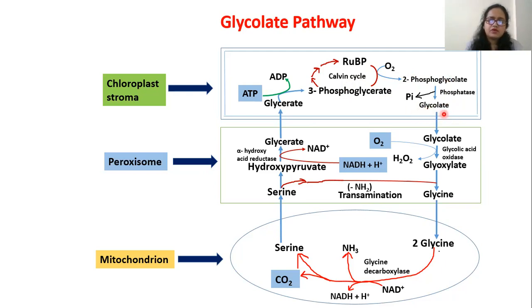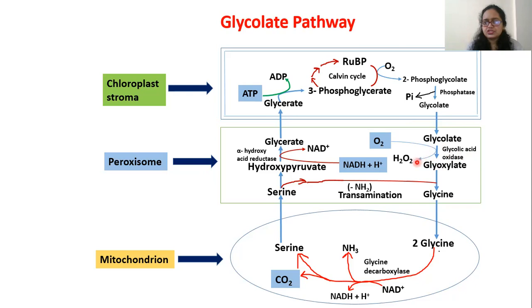This glycolate, with the help of transporters, enters the peroxisome. In leaf peroxisomes, glycolate is further oxidized with one oxygen molecule in the presence of the enzyme glycolic acid oxidase, converting it into glyoxylate. This oxidation generates one H2O2 molecule — hydrogen peroxide — which is dangerous, but because it is within the peroxisome, peroxidase enzymes present there render it harmless.